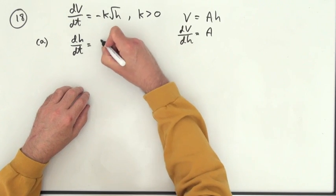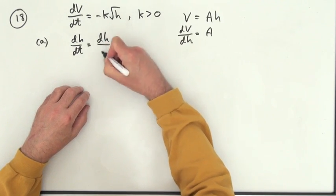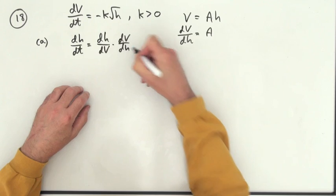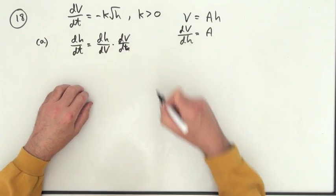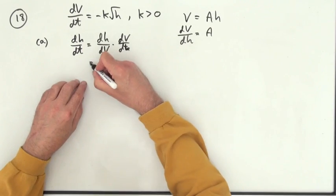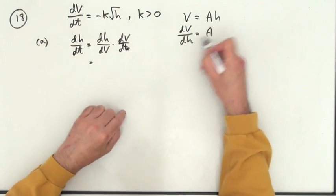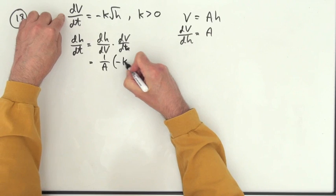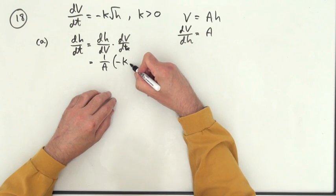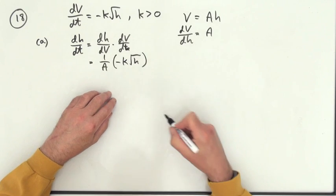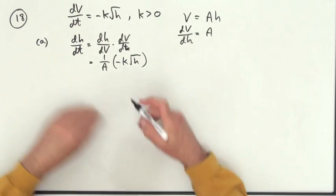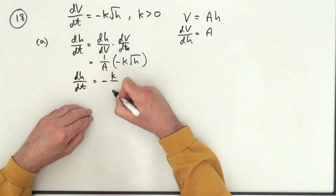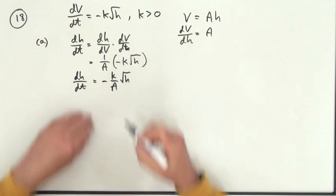I want dH by dT, but I could get dH by dV and multiply it by dV by dT. So dH by dV is simply 1 over A. And dV by dT we had right at the beginning, thanks to Torricelli. So dH by dT equals negative K over A root H.